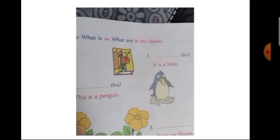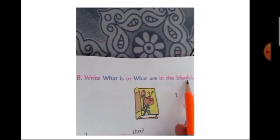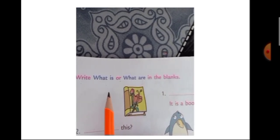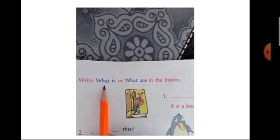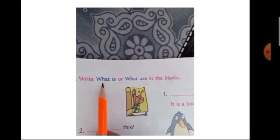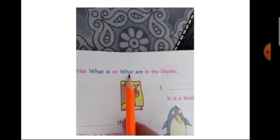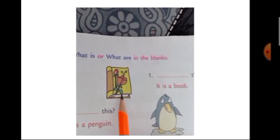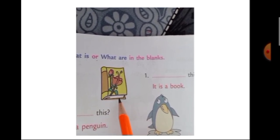Now let's go to the next page. Read this question: Write 'What Is' or 'What Are' in the blanks. Now children, when we are going to ask a question, we use 'What Is' or 'What Are'. For singular nouns — like for one thing, one person, or one animal — we use 'What Is'. And for many things, many persons, or many animals — for plural nouns — we use 'What Are'. Here you can see the picture of one book, so how will you ask the question? What Is This?